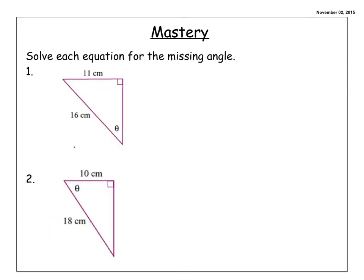Here is your mastery ticket. You have two questions, both of which have thetas in them instead of X's. That doesn't really matter — you know that is your reference angle and it becomes X in the equation anyway. You are going to set up your trig equations and solve for those missing angles.